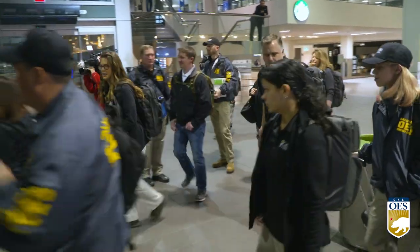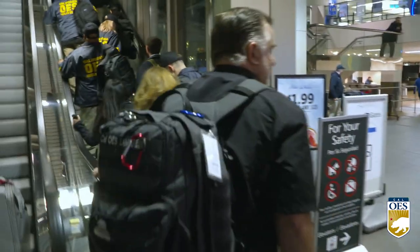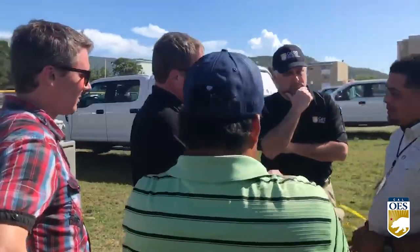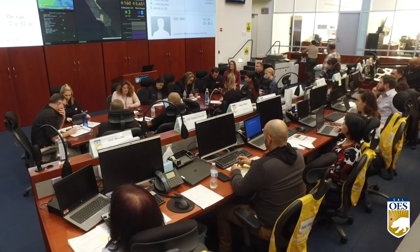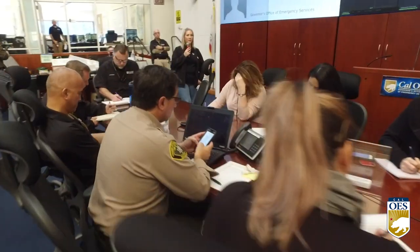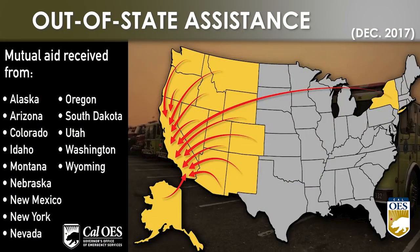EMAC plays a critical role within the emergency management community by providing expertise and support during times of need. EMAC is implemented on behalf of each state governor by the state emergency management agencies. The process is relatively straightforward — once a state declares an emergency, a request for resources can be initiated, starting with the closest states. Mutual aid resources are then mobilized and deployed to impacted areas, starting with a 14-day deployment.